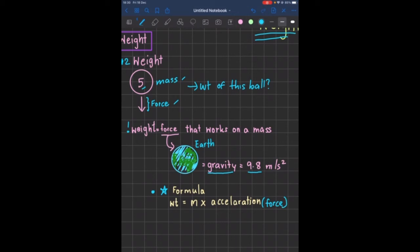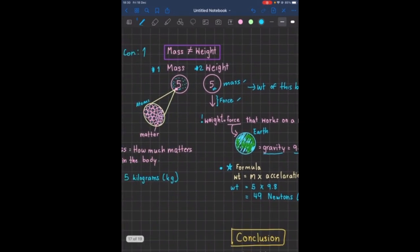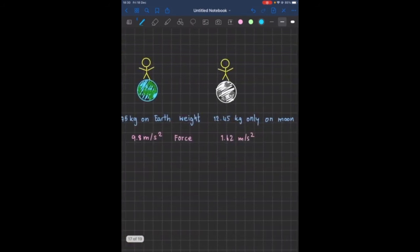So the weight here would be, what's our mass? Our mass is five. Five kilograms times the force, which is 9.8. And the answer that we get would be 49 newtons. The unit of weight is newtons. So there we have it, the difference of mass and weight.